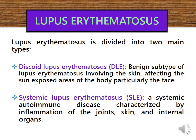Lupus erythematosus is divided into two main types: discoid lupus and systemic lupus. The discoid lupus is the benign subtype of lupus erythematosus which affects only the skin of the sun-exposed areas of the body. But systemic lupus is a systemic disease, not only affecting the skin but also the joints and internal organs.